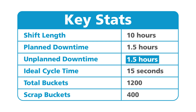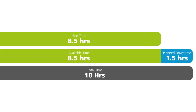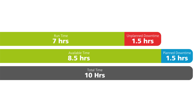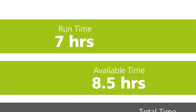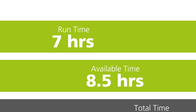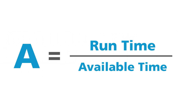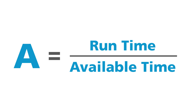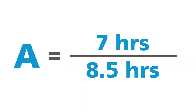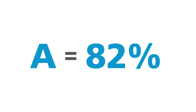Our unplanned downtime totals 1.5 hours. We can subtract this from our 8.5 hours of available time to find our machine's runtime. Our machine therefore operated for 7 out of the 8.5 hours available. Availability is the ratio of our machine's runtime to its available time. Across our shift, our machine's availability was therefore 82%.